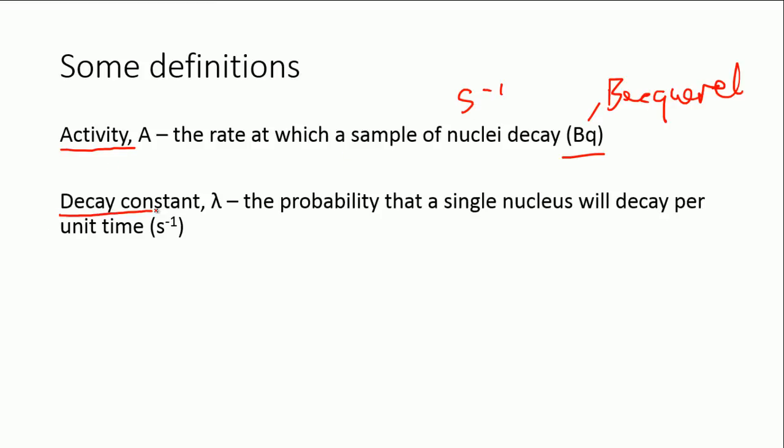Another new quantity for you is the decay constant. The decay constant is given the symbol lambda. The decay constant is the probability that one single nucleus within our sample of radioactive material will decay per unit time. That again is measured in per seconds, but it doesn't have its own unit, so we just leave it as per seconds. We've got activity measured in Becquerels, which is the number which actually decay per second, the rate, and the decay constant, which is the probability that one of them in our sample will decay per unit time.